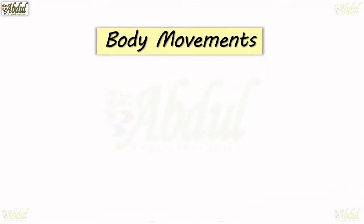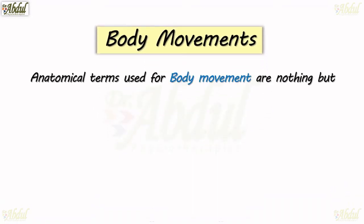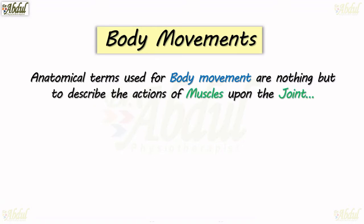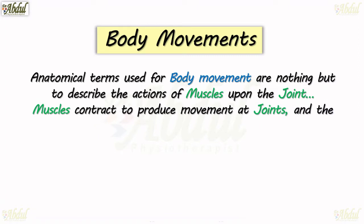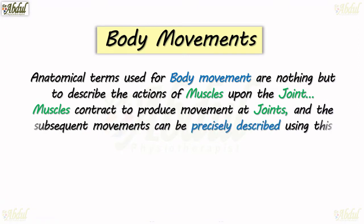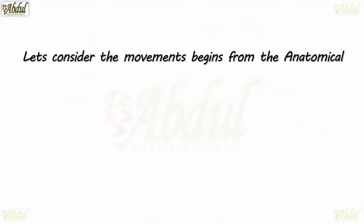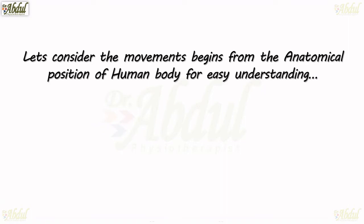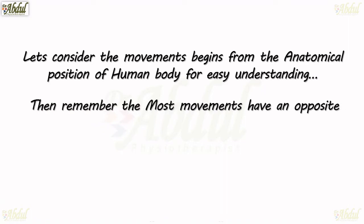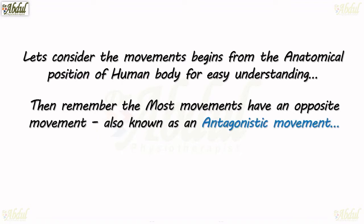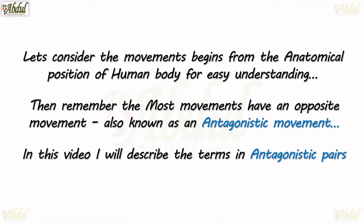Anatomical terms used for body movement are used to describe the action of muscles upon the joint. Muscles contract to produce movement at joints, and the subsequent movement can be precisely described using this terminology. Let's consider that movement begins from the anatomical position of the human body for easy understanding. Remember, most movements have an opposite movement, also known as antagonistic movement. In this video, I'll describe the terms in antagonistic pairs for ease of understanding.